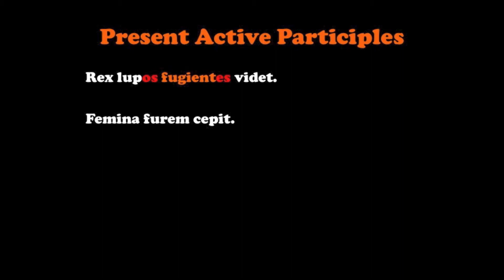Here's another example. Femina forem capet — the woman captured the thief. Which woman captured the thief? Femina quarens forem capet. Remember, the NS on quarens is the equivalent of the blank in our third declension endings; therefore it is most likely nominative singular. Femina is also nominative singular; therefore I know quarens modifies femina. Femina quarens forem capet — the woman running captured the thief.